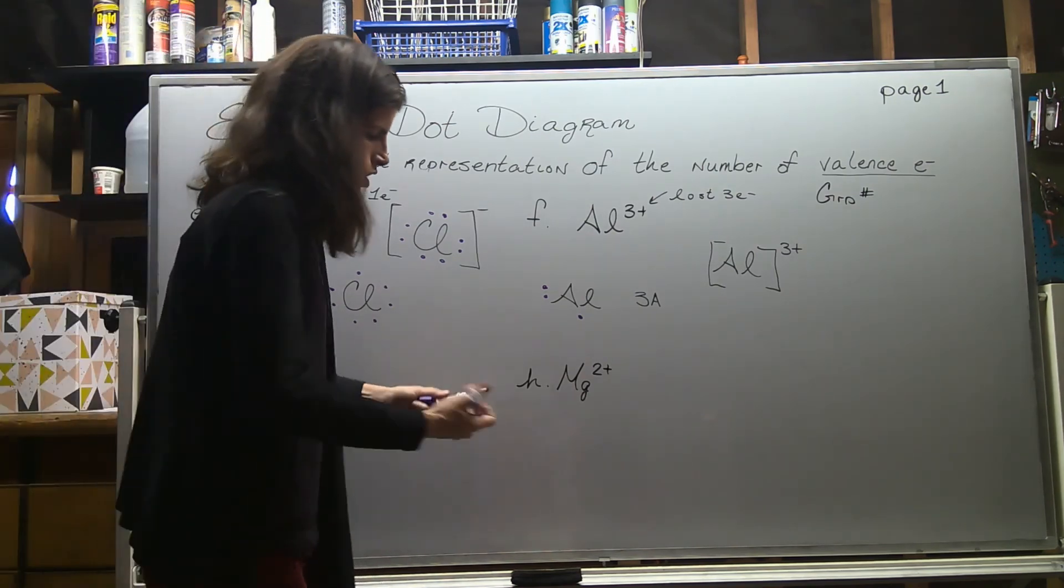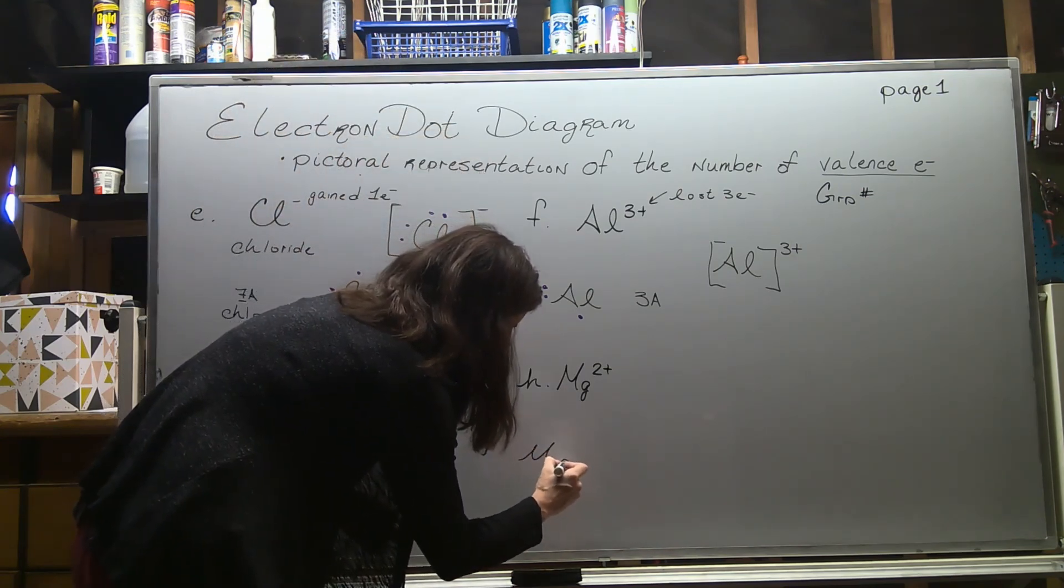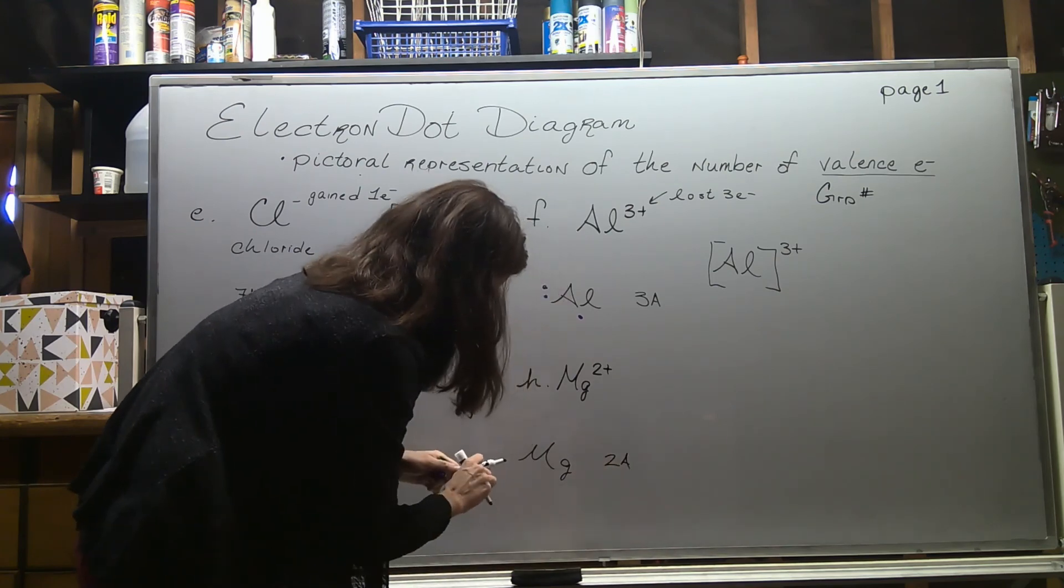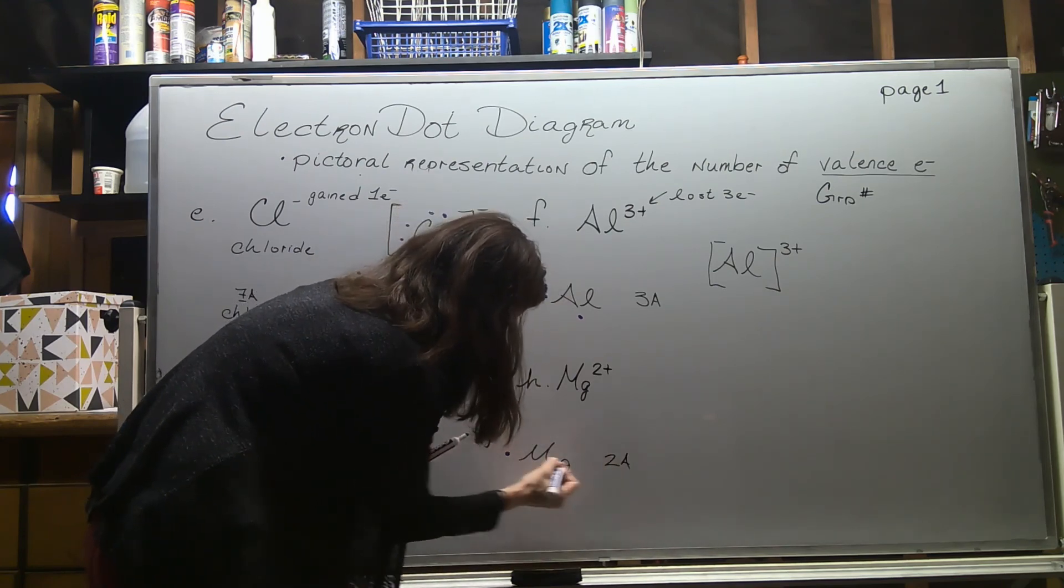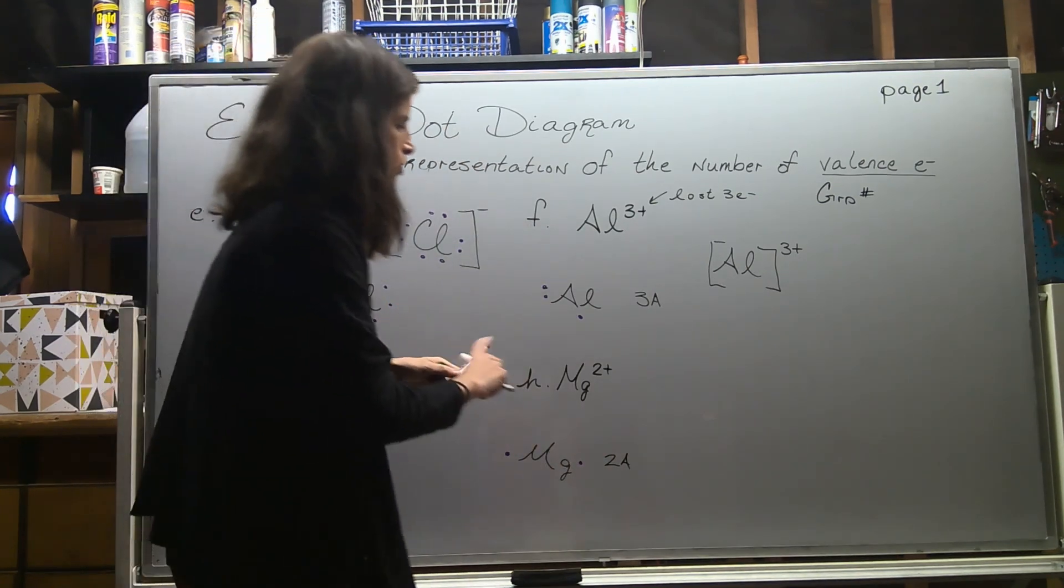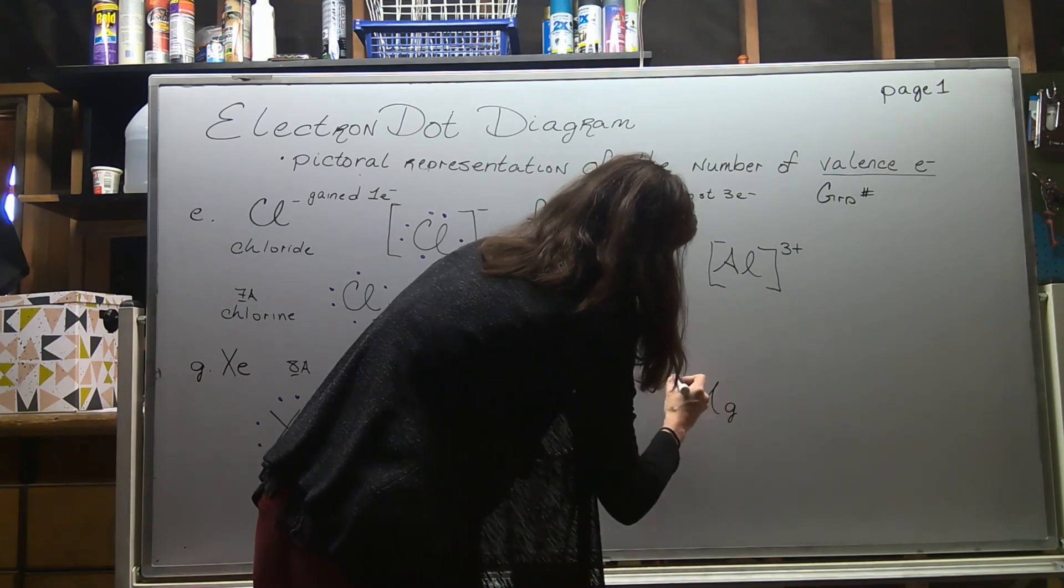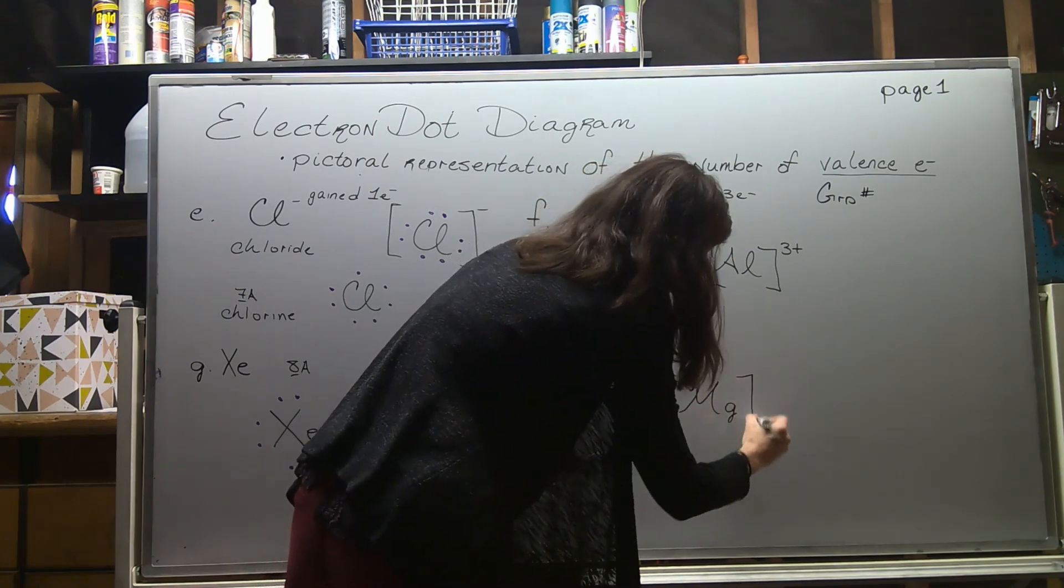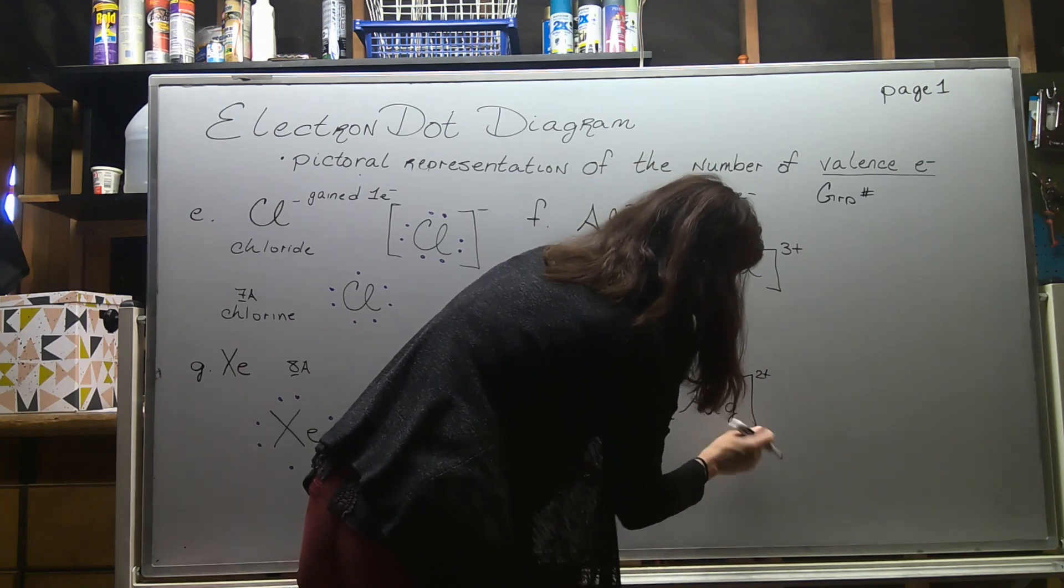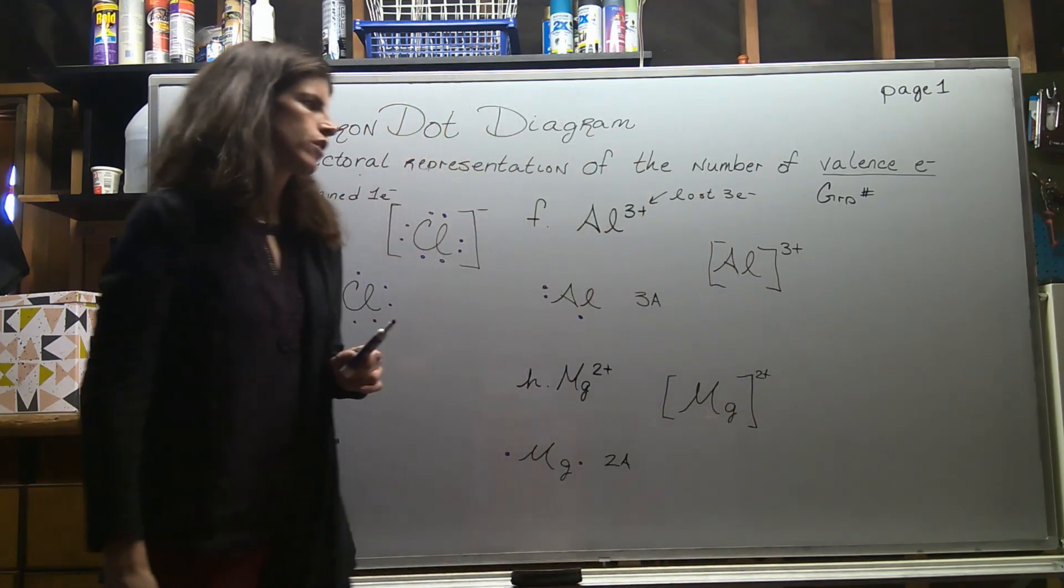Magnesium ion - typically magnesium would have two valence electrons because it's in group 2A. However, the magnesium ion lost both of those valence electrons, so I would just do something like this with the square brackets again, but no dots because it lost its valence electrons.